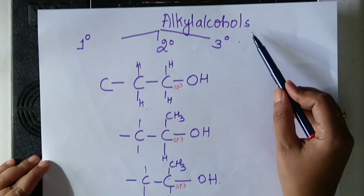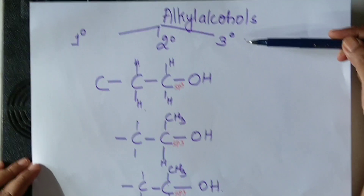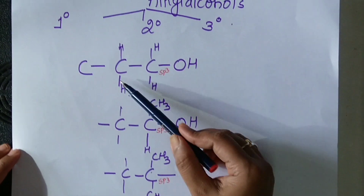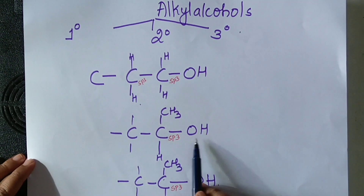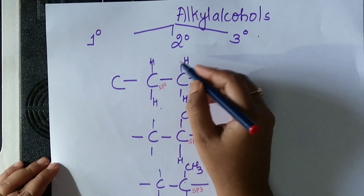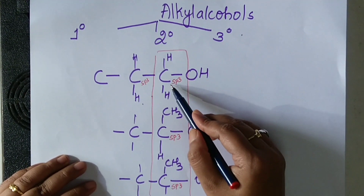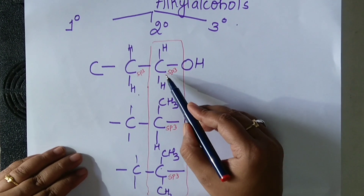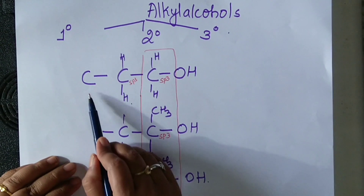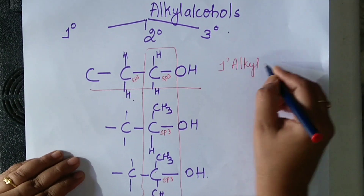Alkyl alcohols can further be classified into three types: primary alkyl alcohols, secondary alkyl alcohols, and tertiary alkyl alcohols. In all these examples, OH is attached to an SP3 carbon atom next to SP3. In the first case, OH is attached to a primary carbon atom — a carbon atom attached to only one carbon atom directly. Therefore, this molecule is an example of a primary alkyl alcohol.